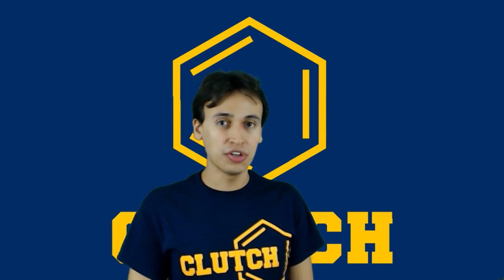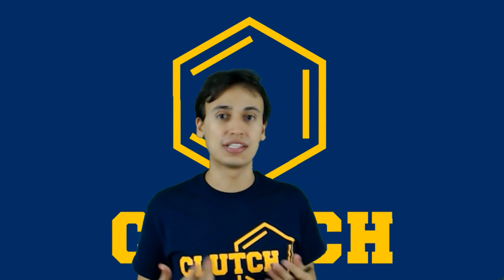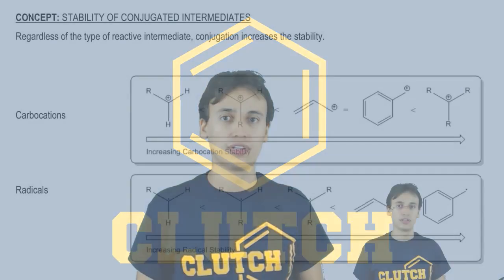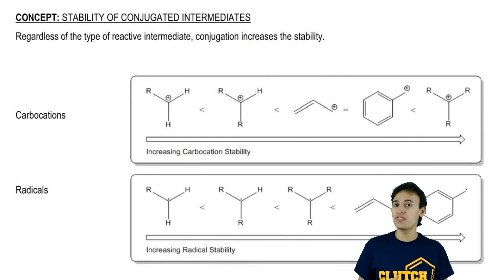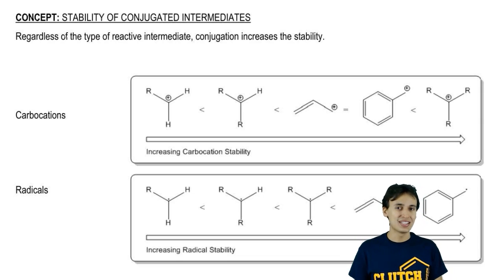Now let's focus on the specific intermediates that conjugation helps to stabilize. Regardless of the type of intermediate you are, whether you're a carbocation or a carbanion, the ability to resonate is always going to make you more stable.